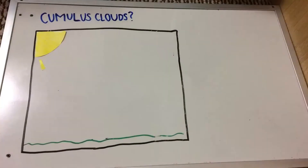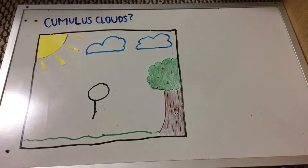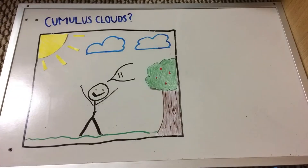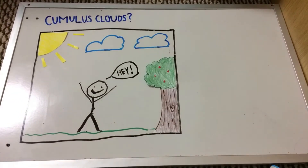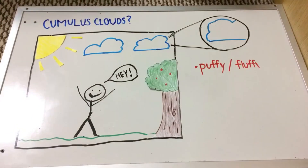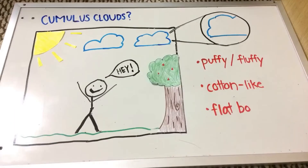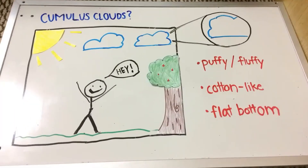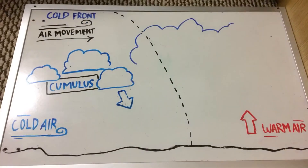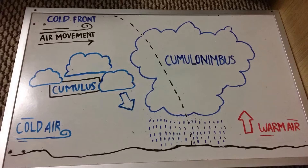So, what is a cumulus cloud? Remember when you were little and used to draw a sun in the corner and a fluffy cloud? Well, that's a cumulus cloud for you. They're fluffy, cotton-like, and have a flat bottom. Cumulus clouds usually turn into cumulonimbus clouds, which produce rain. This rain is heavy and focused in one area.